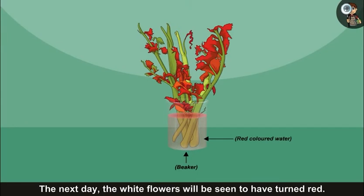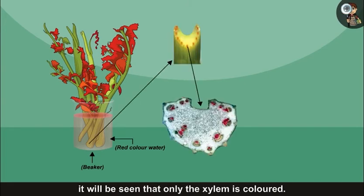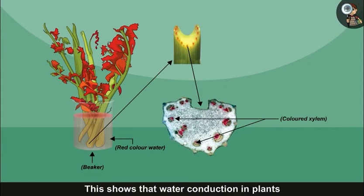The next day, the white flowers will be seen to have turned red. When a section of the stem of the plant is cut, it will be seen that only the xylem is colored. This shows that water conduction in plants takes place through xylem.